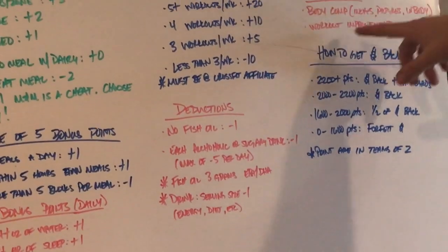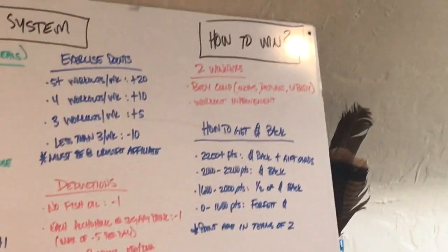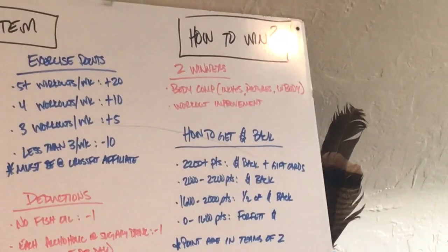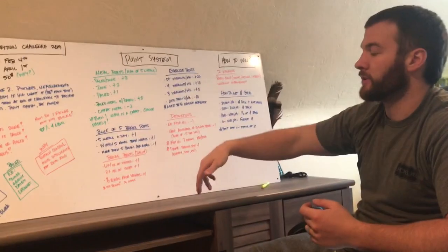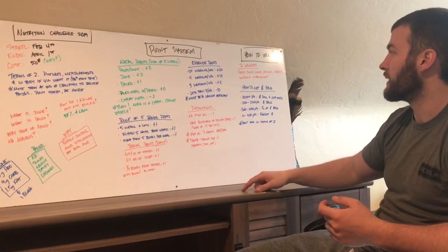We'll do two winners. So how do I win? You're going to do body composition. So we're going to do the inches. If you do the in body, we'll do the pictures and we're going to do workout improvements. So we're going to do start out with a workout on Monday. So on February 4th, we'll do a workout at the end of it on April 1st. We will retest that workout. The person who improves the most, we'll get a workout improvement.